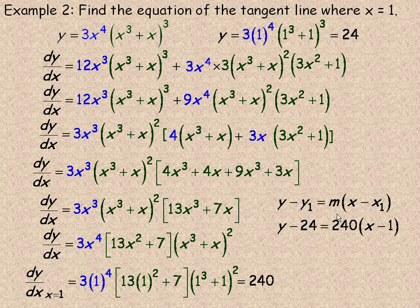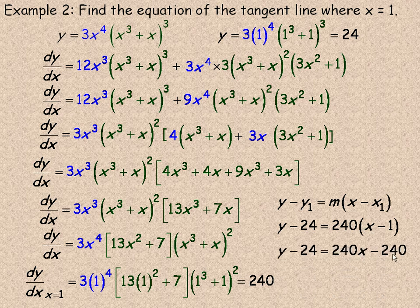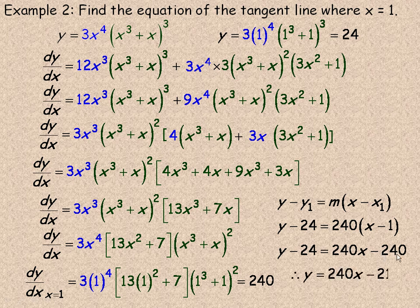So that's 24. m is 240. x1 is 1. And I'll expand out on the right side here. 240 times x minus 1 would be 240x minus 240. And then it's easiest to write this in slope y-intercept form. Because I'll just add 24 to both sides, or bring the negative 24 over. Add it to the negative 240 here. And I'll get negative 216 from my y-intercept. So there's the equation by tangent line, y equals 240x minus 216.